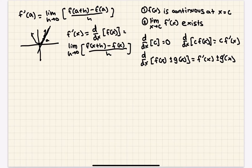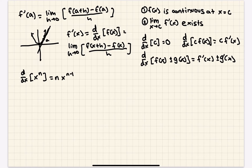With these properties, we also have some derivative rules. First is the power rule: the derivative of x^n, where n is a constant, equals n·x^(n-1). You bring down the exponent, multiply it by the coefficient, and subtract 1 from the exponent — that's your derivative.